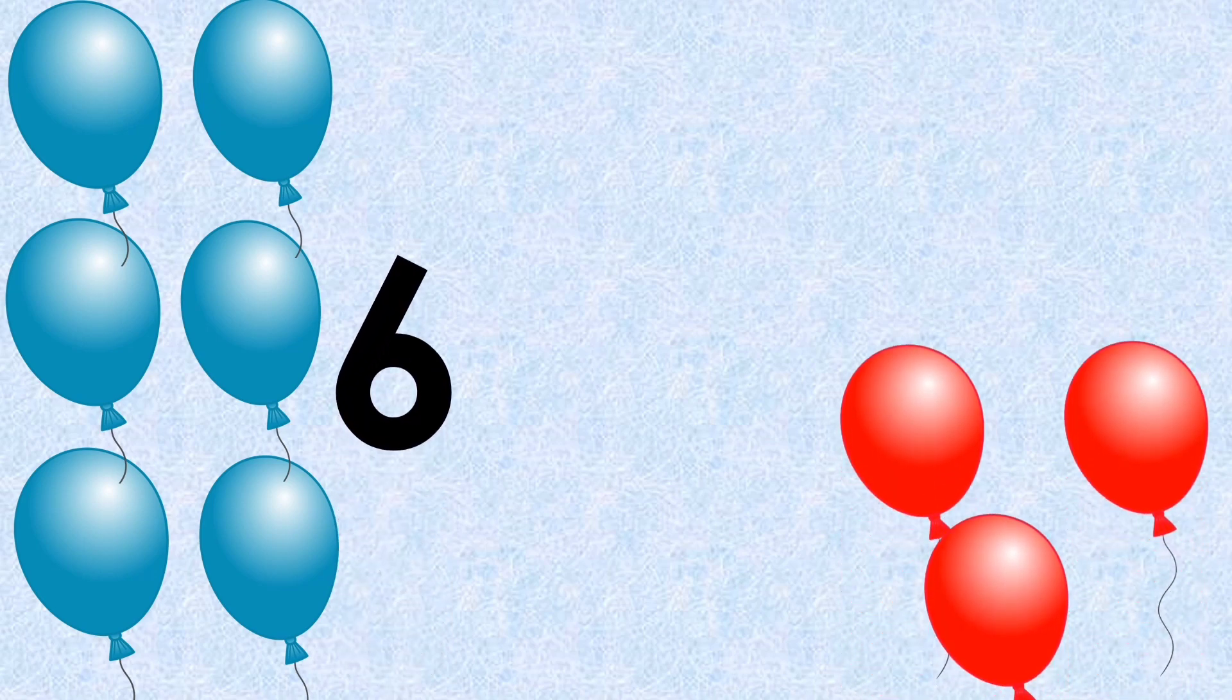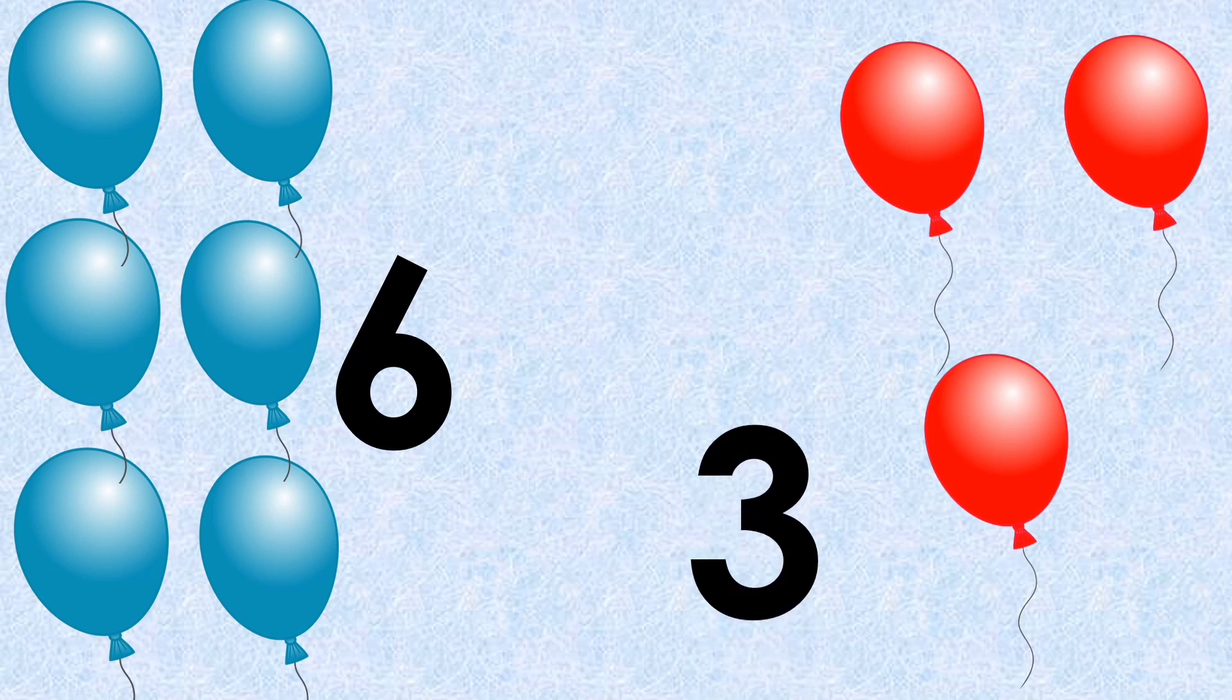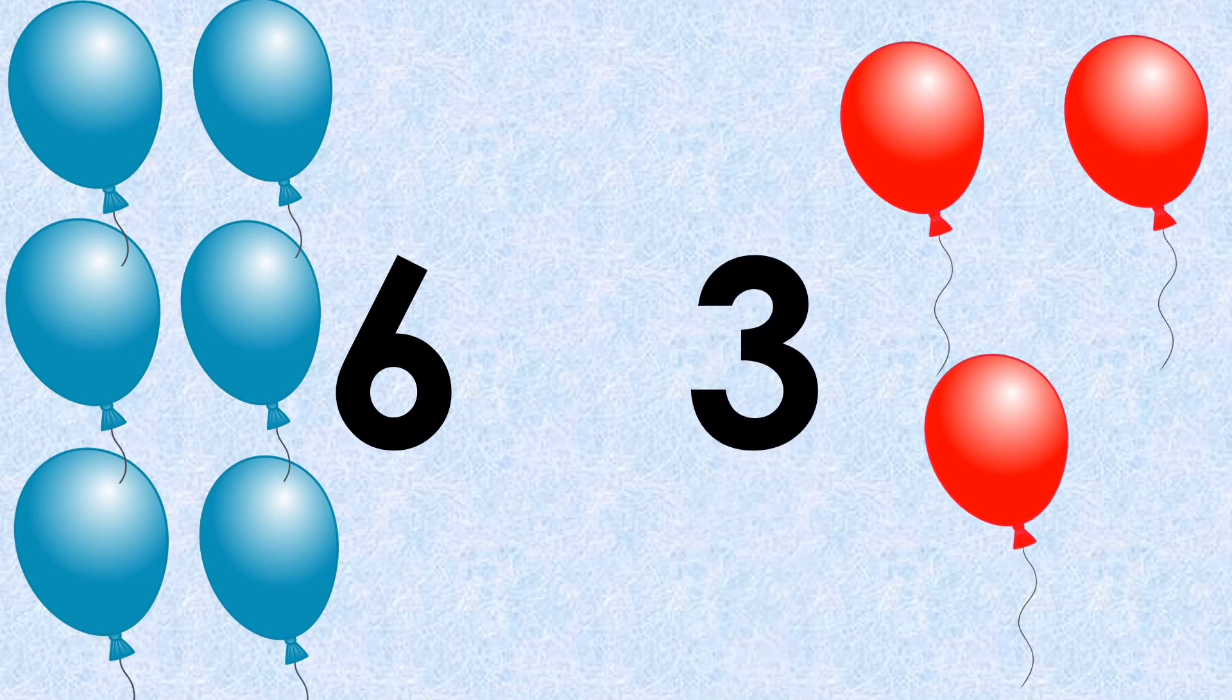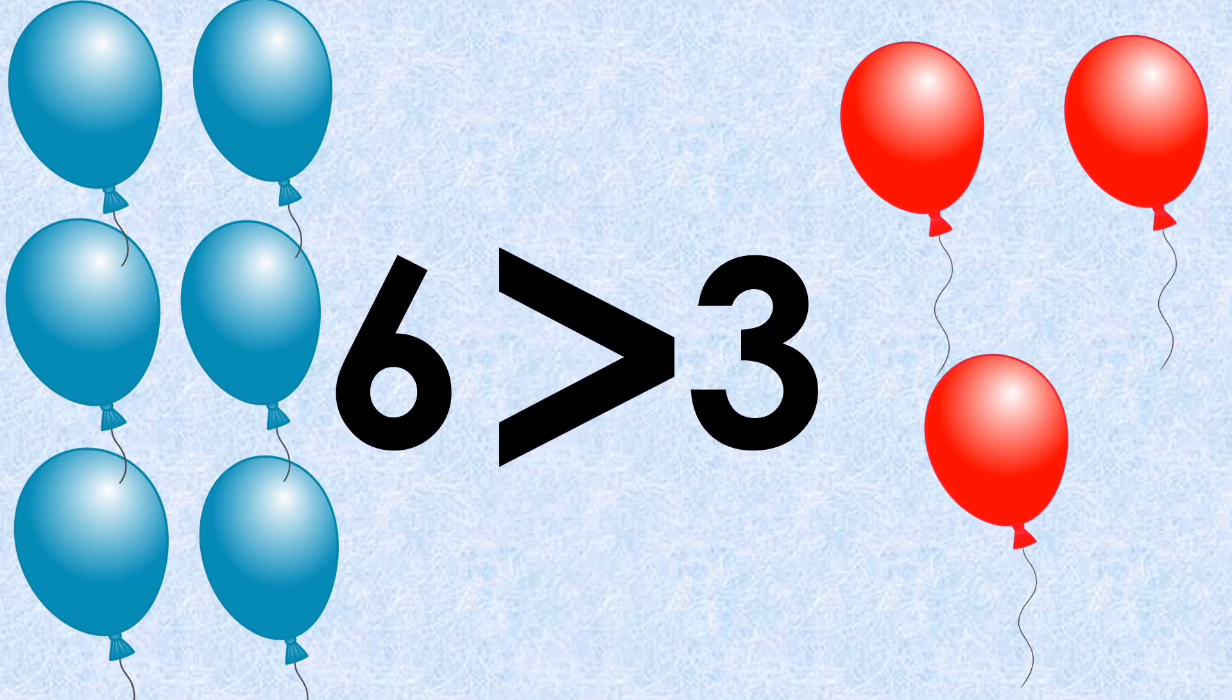Number of blue balloons on one side: six. Number of red balloons on the other side: three. So which number is bigger? Yes, six. So we will put the greater than sign. How we will read this? Six is greater than three.